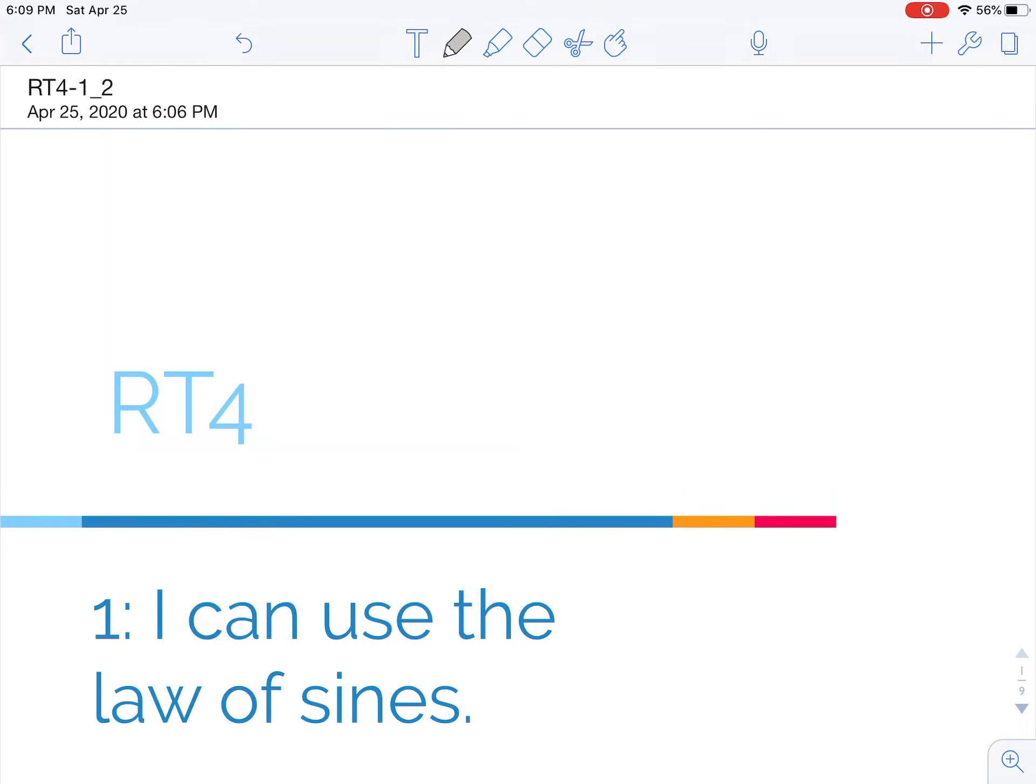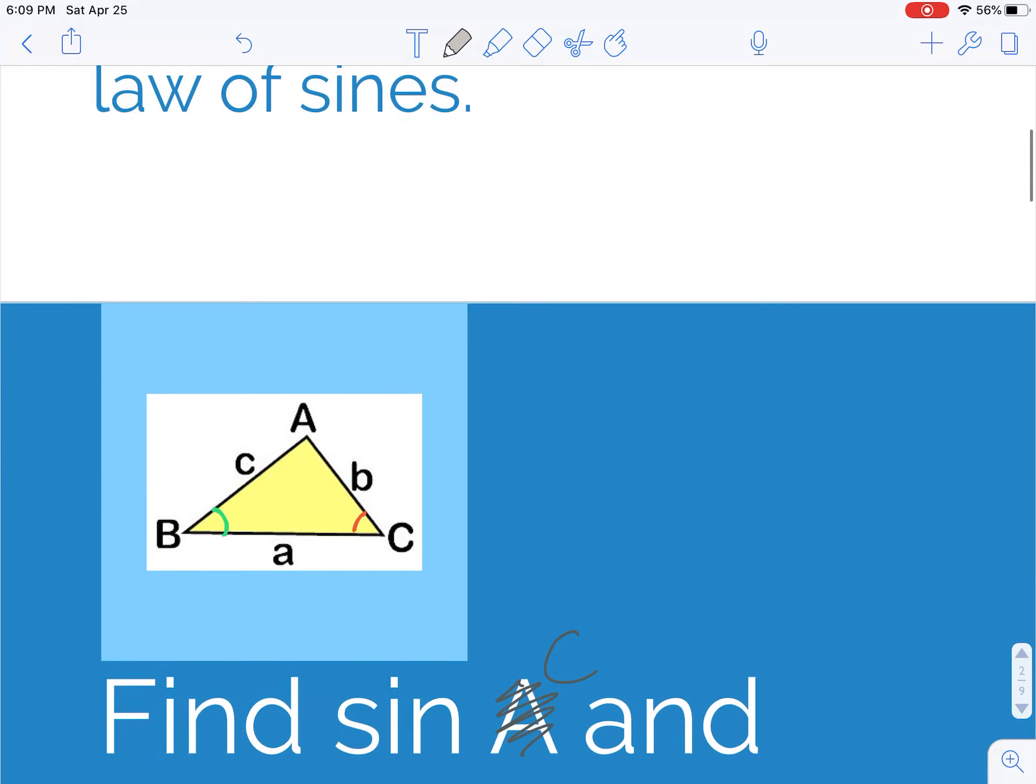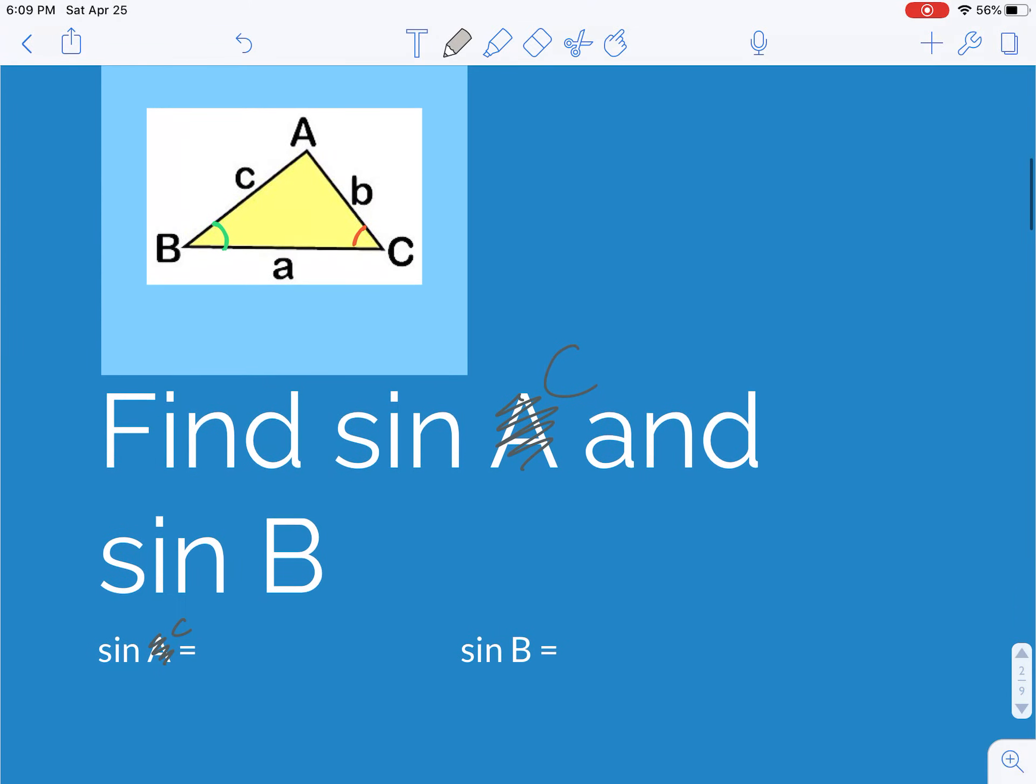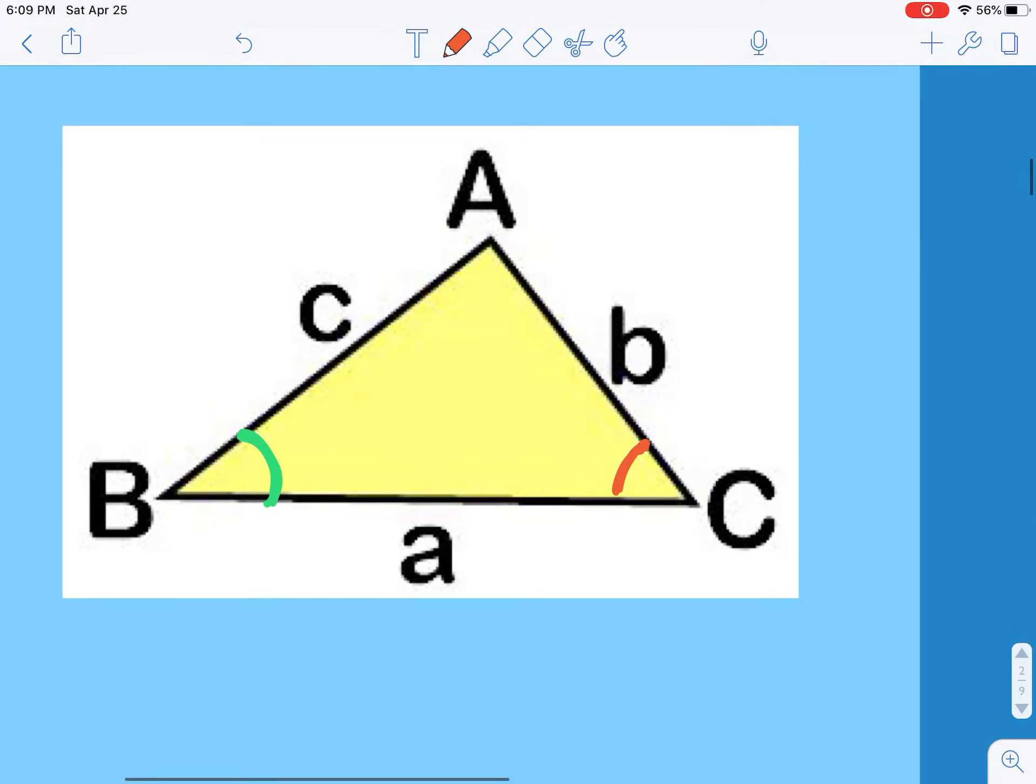In RT4-1, we're going to use the law of sines. We're going to start by finding the sine of angle C and the sine of angle B. So with C, my opposite side is little c, my hypotenuse is A.